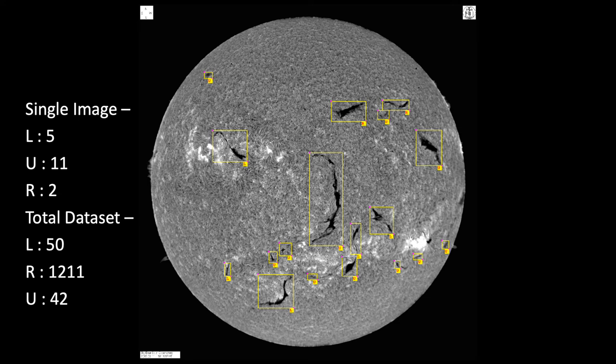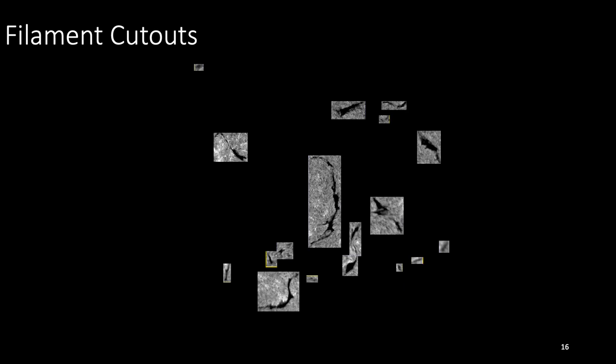So, to overcome this issue, we need to increase the number of minority class filaments, which can be done when we take the cutout of the filaments and use the minority class filaments to create similar images, which we can say as data augmentation.